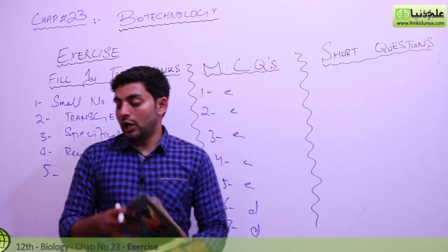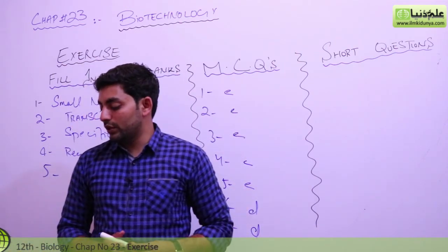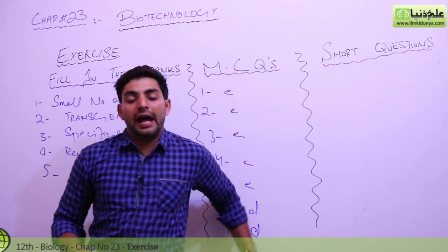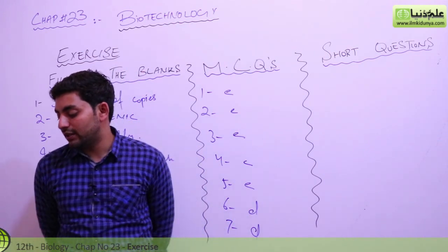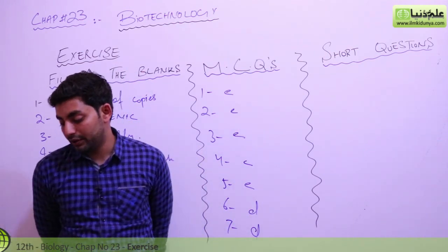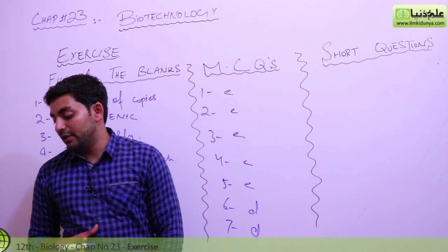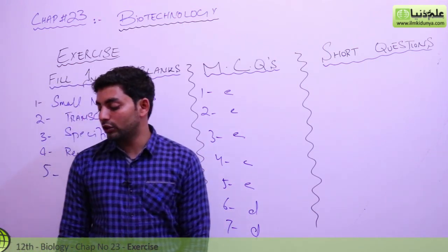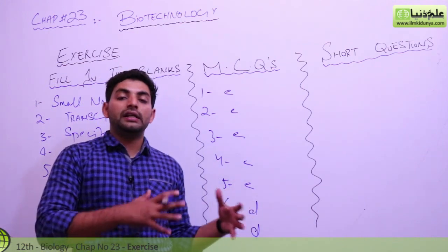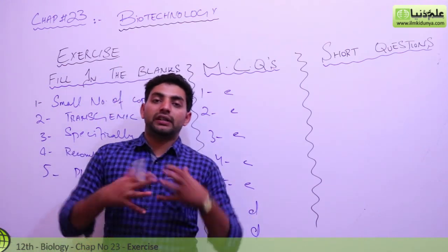Now going towards the short questions. First of all we have the short question: how and why transgenic animals that secrete a product are often cloned? Transgenic animals that secrete this specific product - why do we want to clone? To clone, this is what we do.